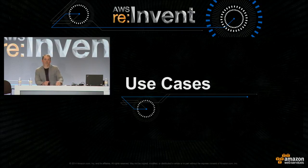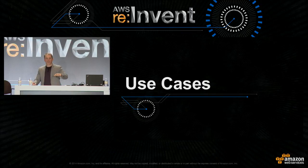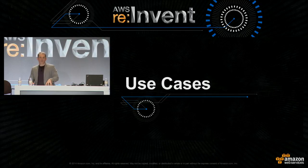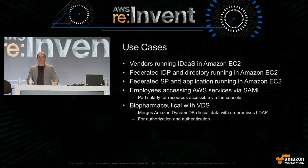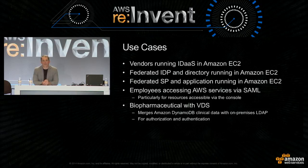Let me point out some use cases we're seeing in the field, in descending order of prevalence. First: look at the identity management market—the vast majority of people offering identity management as a service are doing it within EC2, because it takes care of replication, scalability, whatever you need. Second: people are installing a federated IDP within EC2 to provide single sign-on to partners, consumers, maybe even employees—and they need a directory service to do it. Now with Simple AD, we'll see some changes in that. Third: federated service providers running in EC2—the SP takes SAML credentials, validates them, and issues a local credential type an application can consume. You don't necessarily need a directory services environment because all the attributes come in through the SAML assertion.